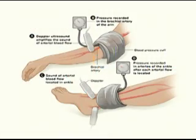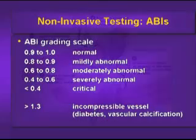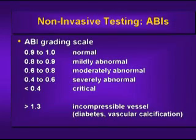PAD can be diagnosed very simply just by feeling the pulses in your legs. If you have diminished pulses, this is an indicator that you have PAD. There is also a very simple test called an ABI, or ankle brachial index, which measures the ratio of blood pressure in your legs compared to your arms. Normally this ratio would be one, and a ratio lower than this would indicate there is less blood going to the legs than to the arms.